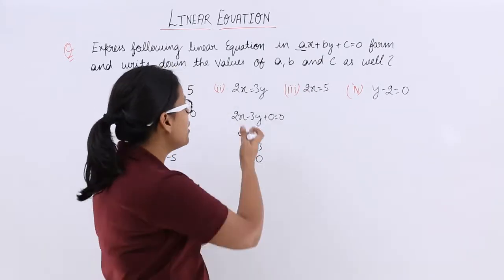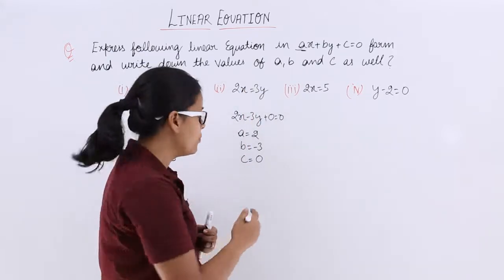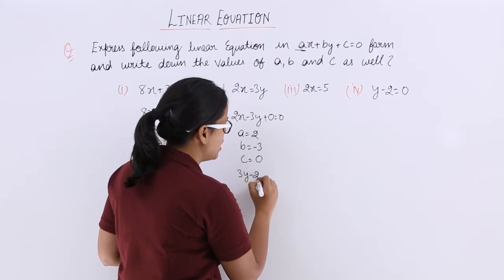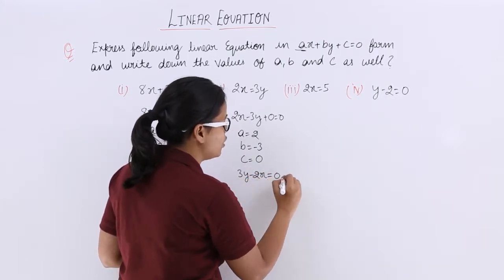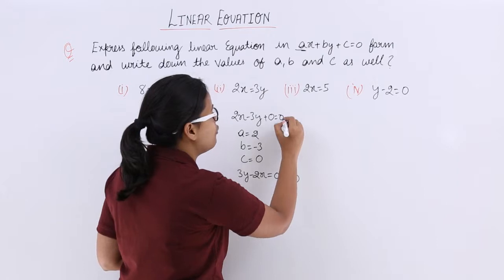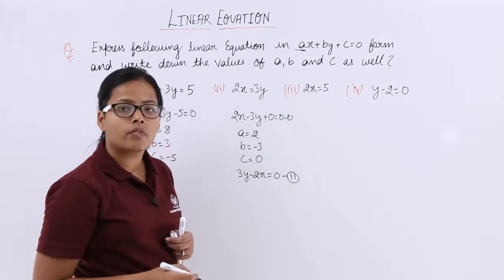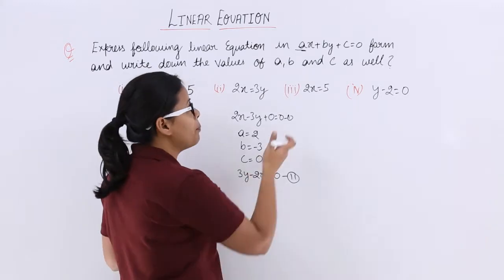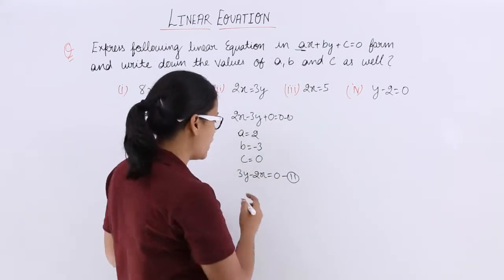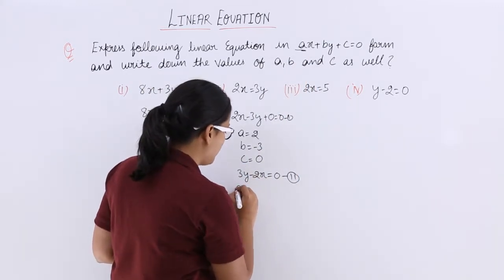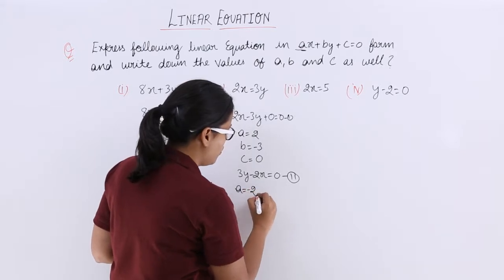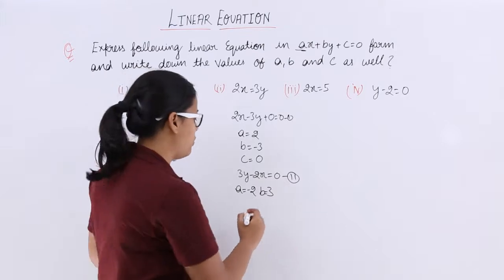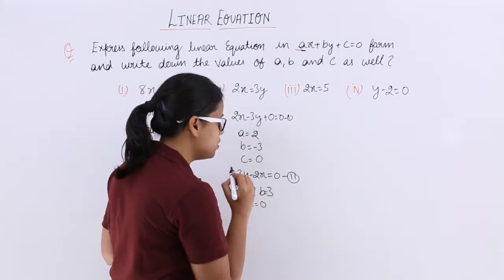You must be wondering — why can't you write this equation in another form? You can also write this as 3y minus 2x equal to 0. Comparing this form with ax plus by plus c equal to 0, the value for a will be minus 2, value for b will be 3, and value for c will be 0.